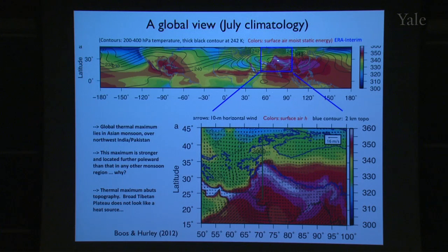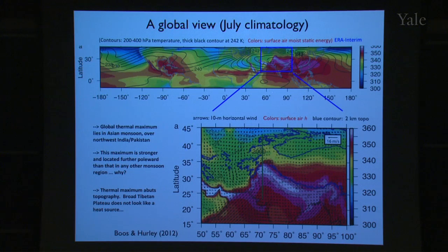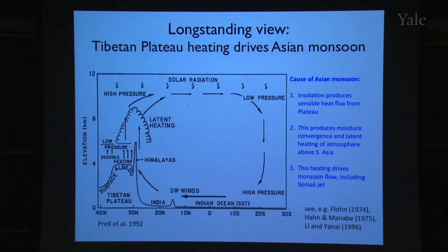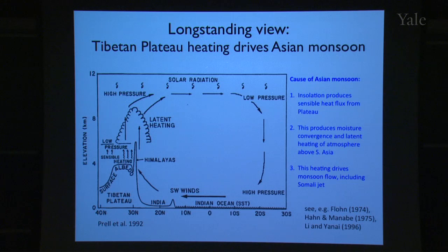This suggests that topography maintains sharp gradients in θE by preventing mixing of the low-energy air over the desert with the high-energy air in the moist monsoon region — and that is what makes the South Asian monsoon so strong and located so far poleward. This is a very different view of what drives the South Asian monsoon circulation from what has been traditionally thought.